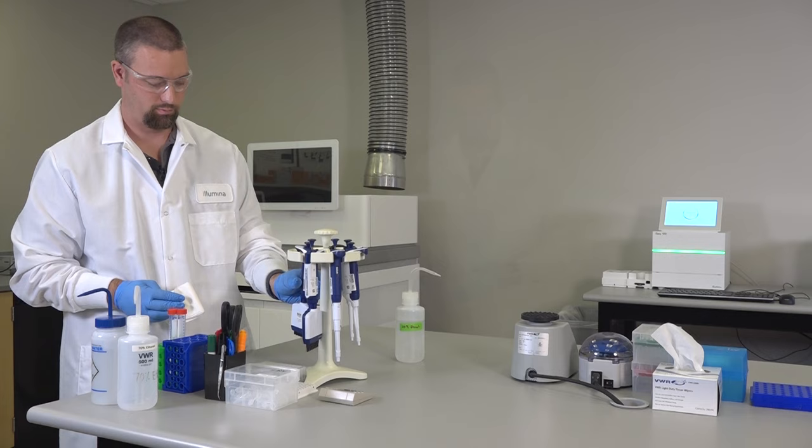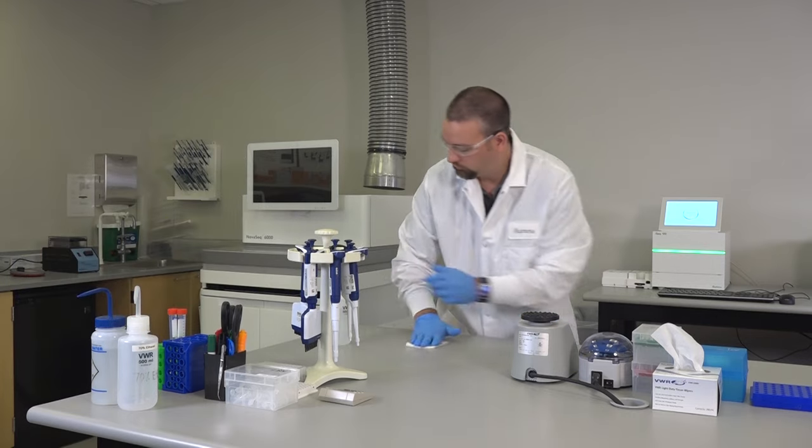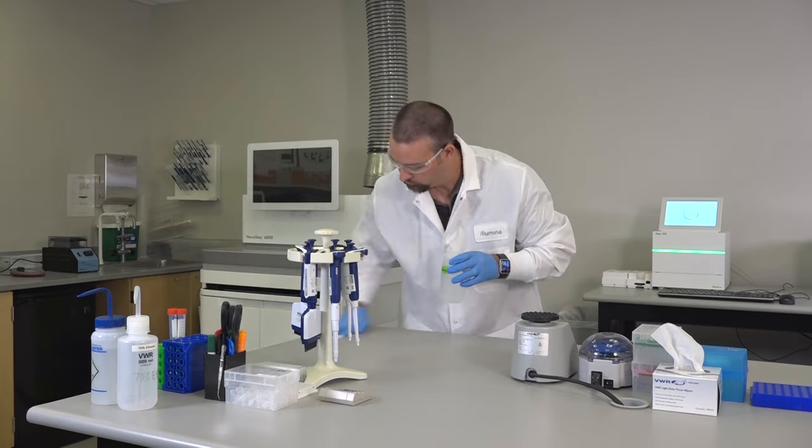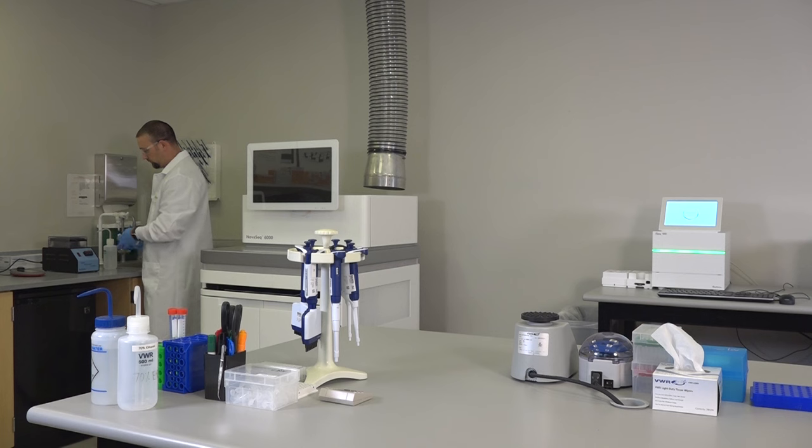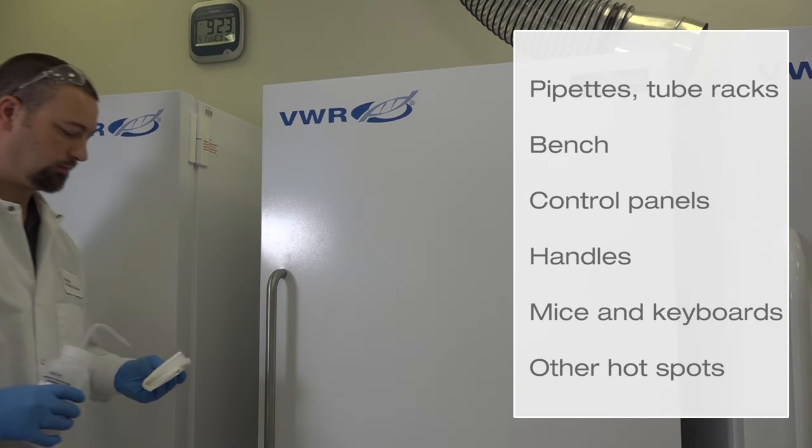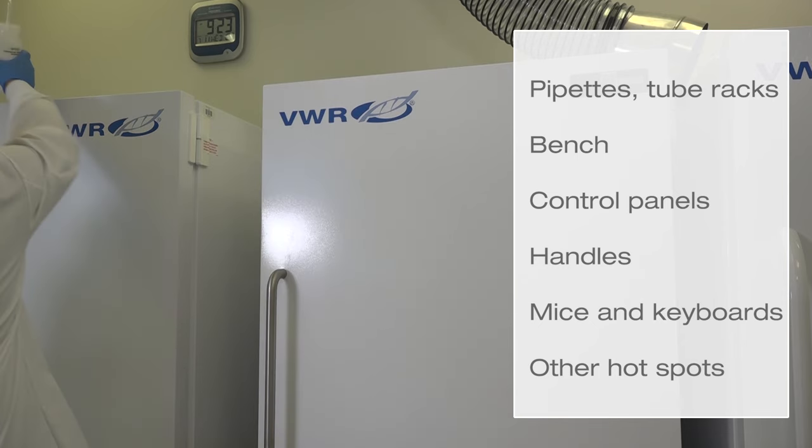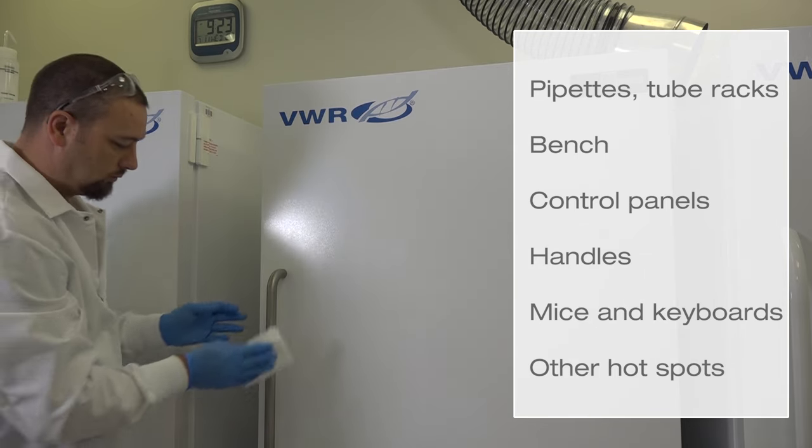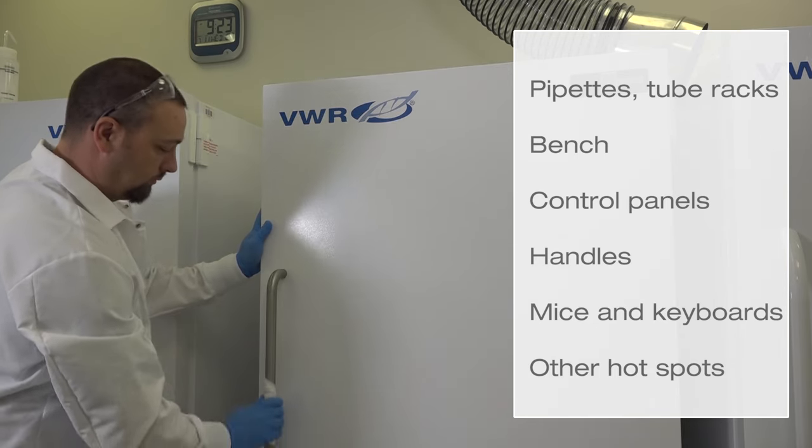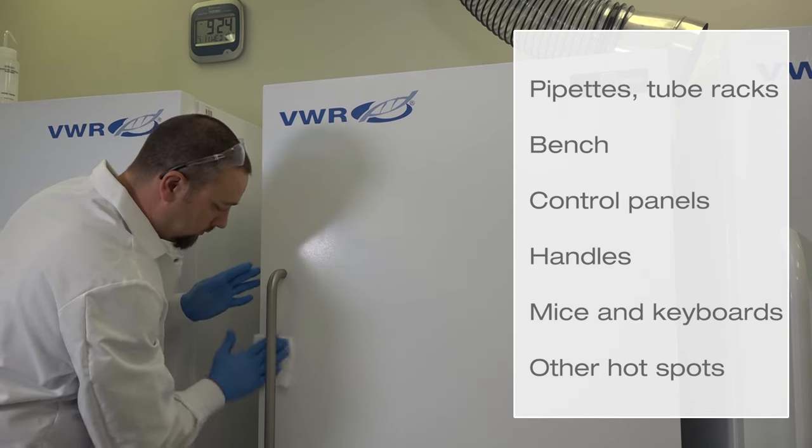Areas to target include pipetters, tube racks, bench tops and other utilized surfaces, control panels for heat blocks, centrifuges, or vortexers, handles for freezers, refrigerators, ovens, or often used drawers or cabinets, computer mice and keyboards, any area that is commonly touched during normal lab operations, often referred to as hotspots.